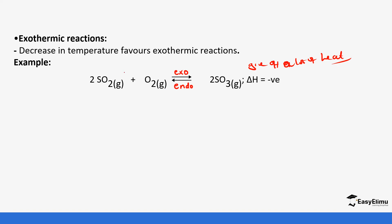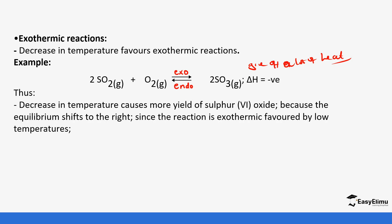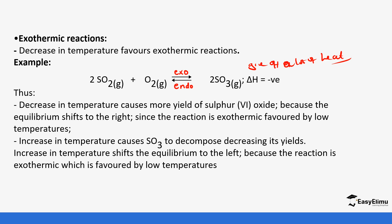When you decrease the temperature, the production of sulfur trioxide is favored. A decrease in temperature causes more yield of sulfur trioxide because the equilibrium shifts to the right, since the reaction is exothermic and is favored by low temperatures. If you increase the temperature it causes sulfur trioxide to decompose, decreasing its yield, because increasing temperature shifts the equilibrium to the left.